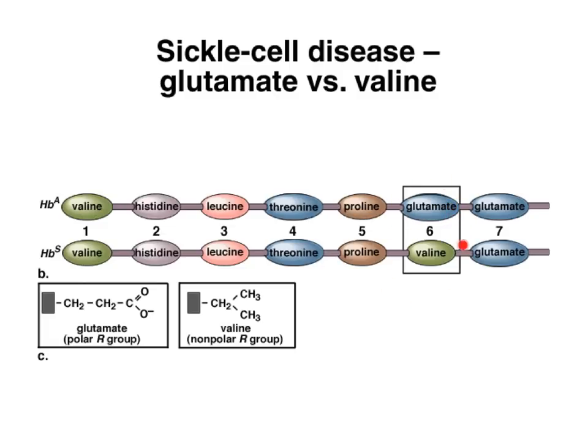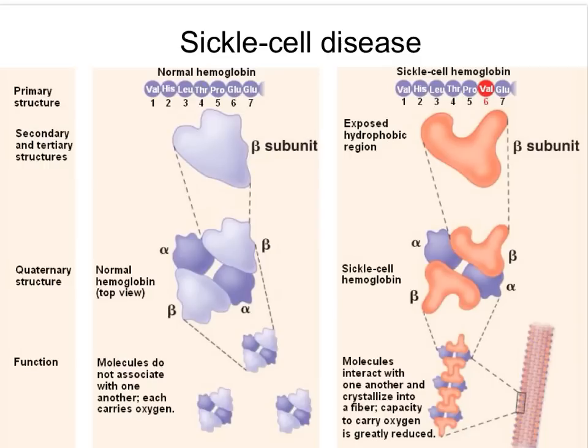And it is changed for a valine, which is a non-polar amino acid. So this is a very different type of amino acid, and it happens to be in a very important part of the protein. So here the primary structure has been affected.